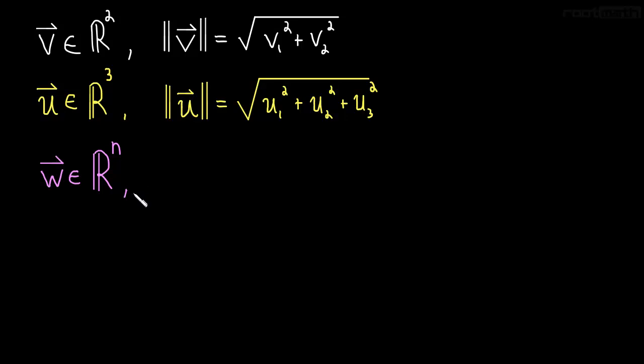A vector in Rn, the length is defined to be as follows: This is just equal to the square root of w1 squared plus w2 squared plus everything in between, so w3 squared plus w4 squared, so on, all the way up until you get to the last component.